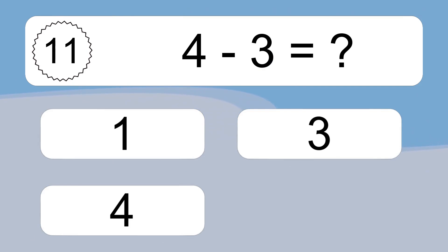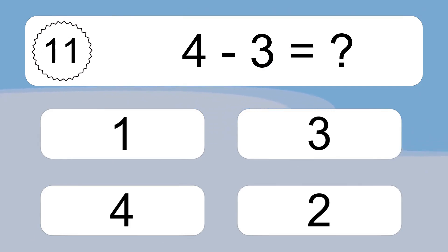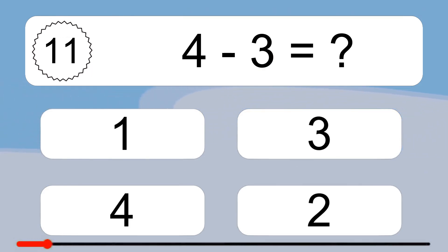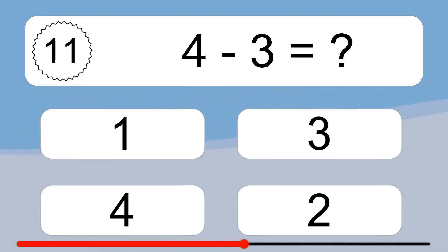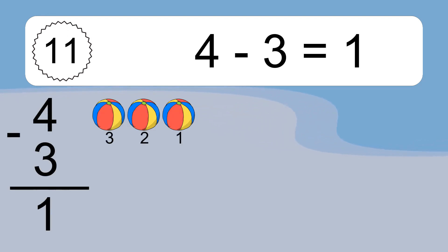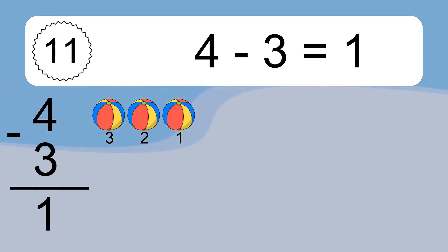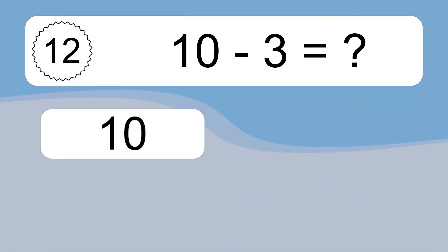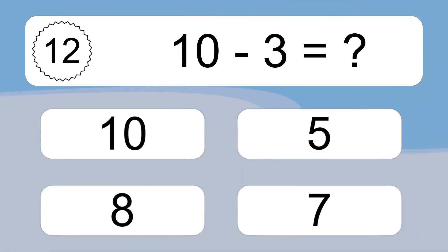4 minus 3 equals what? 4 minus 3 equals 1. Let's count it! 3, 2, 1.